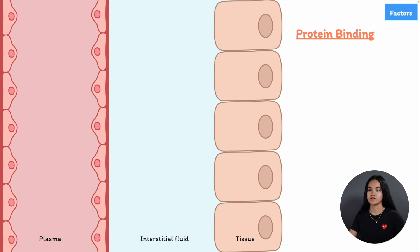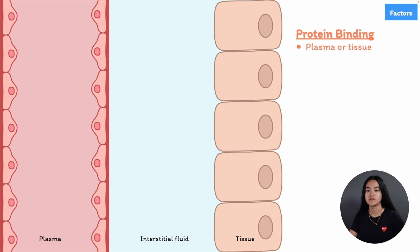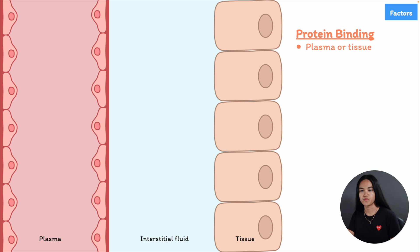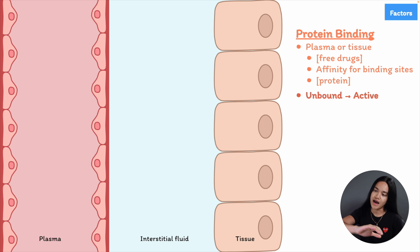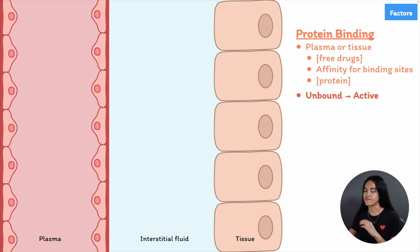The next factor is protein binding, which can be plasma protein or tissue protein binding. This refers to the binding of drugs to certain proteins found in the blood or tissues. Albumin, or serum albumin, is one of the most important proteins to which drugs can bind. Protein binding is determined by three factors: the concentration of free drugs, their affinity for binding sites, and the concentration of protein. Importantly, only unbound drug molecules are pharmacologically active and can pass through barriers to reach tissues.